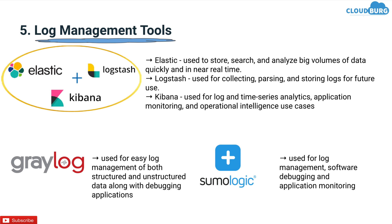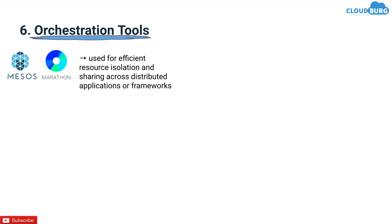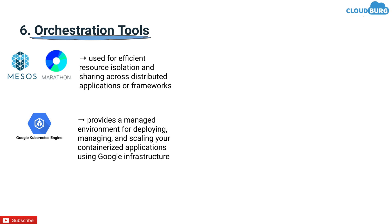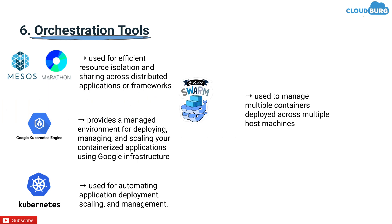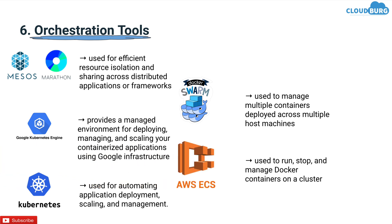The next category is orchestration tools. Here we have Mesos Marathon, which is used for efficient resource allocation and sharing across distributed applications or frameworks. Google Kubernetes Engine provides a managed environment for deploying, managing and scaling your containerized applications using Google infrastructure. Kubernetes is used for automating application deployment, scaling and management. Docker Swarm is used to manage multiple containers deployed across multiple host machines. AWS ECS is used to stop, run and manage Docker containers on a cluster. The top demanding orchestration tools are Kubernetes and Docker Swarm.